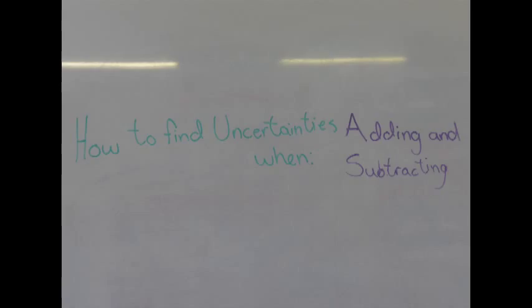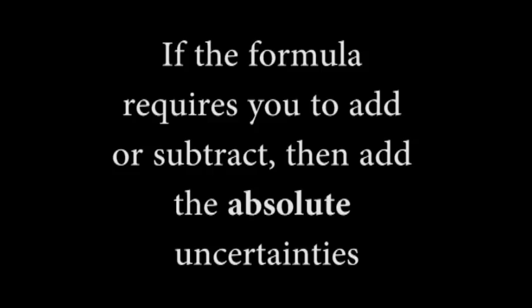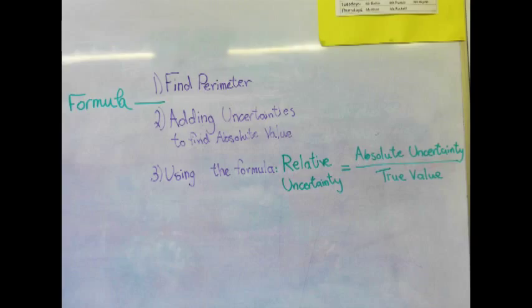Now, let's add and subtract uncertainties. When adding or simplifying uncertainties, we must first find the perimeter of our object. Depending on its shape, the formula varies. However, if the formula requires you to add or subtract, then add the absolute uncertainties. This gives us our absolute value.